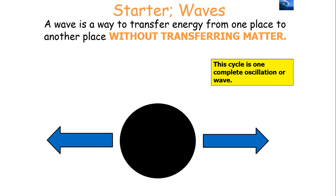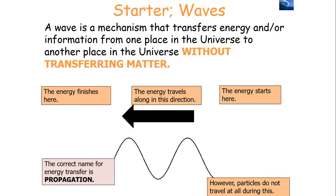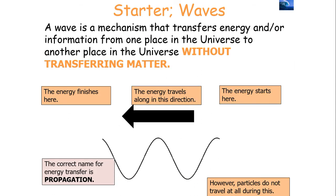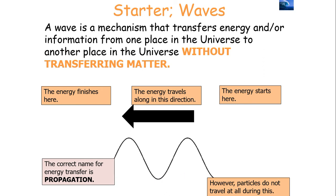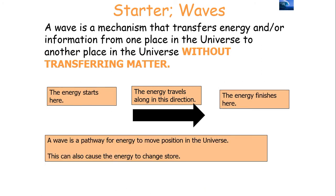You'll notice that the particle finishes where it started. It went one way, back to equilibrium at the centre, to the other way, then back to where it started — the equilibrium centre. The correct name for energy transfer, now we are at A-level, is propagation. So another phrase we would use in terms of how energy is transferred is propagation.